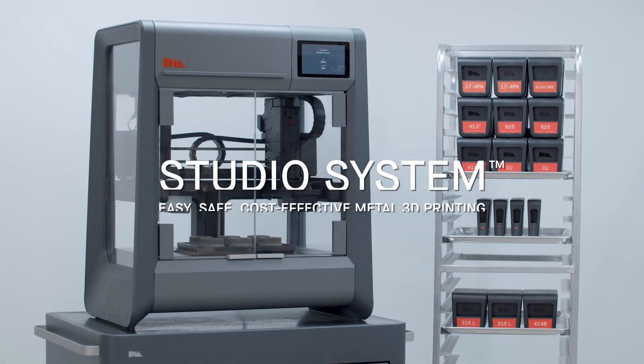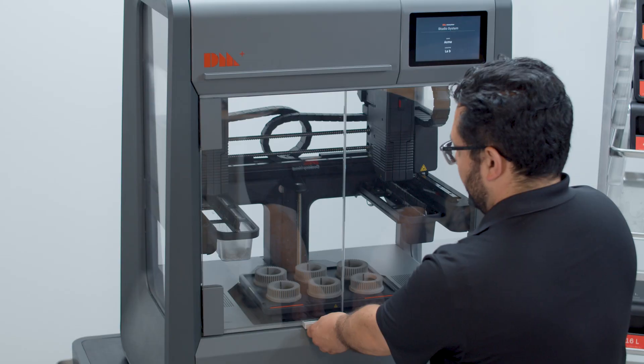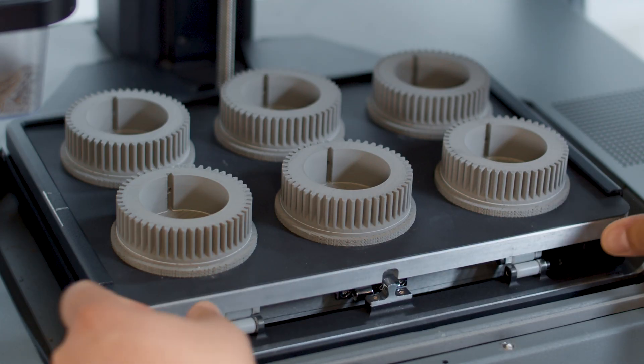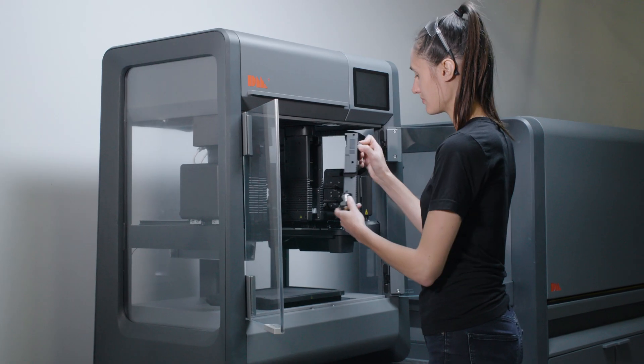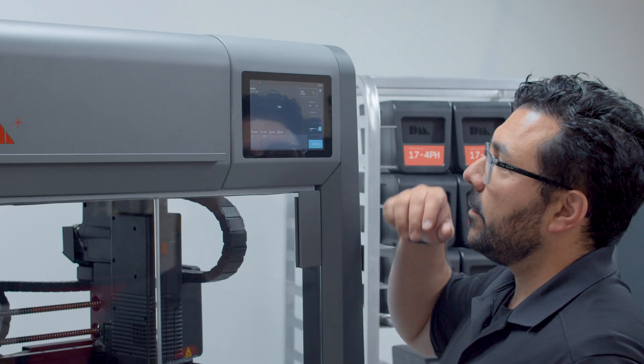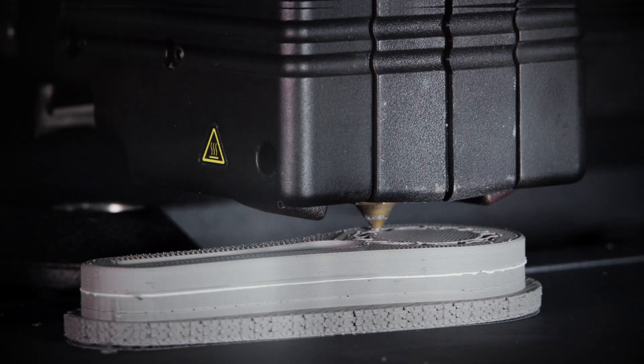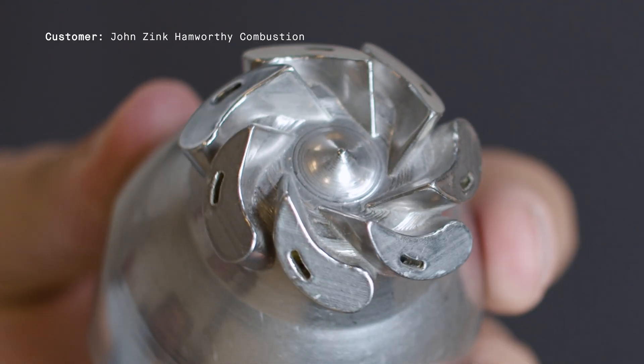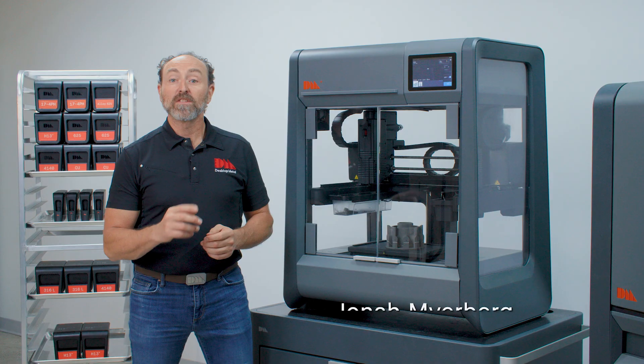The Desktop Metal Studio System was designed to enable easy-to-adopt metal 3D printing for any office, studio, or laboratory environment. Simplified metal part production allows manufacturers to innovate faster and regain ownership of their design process.